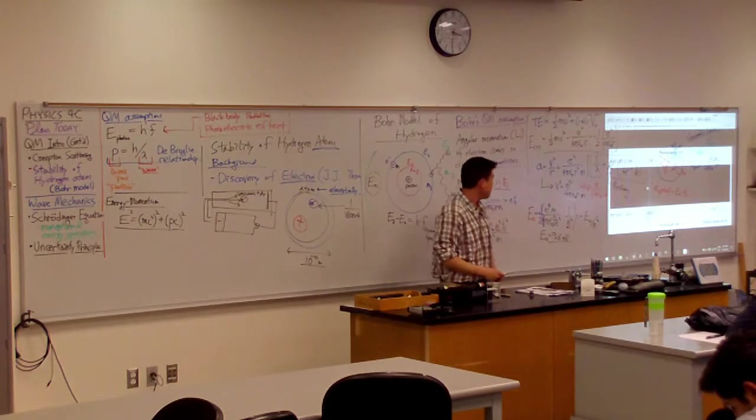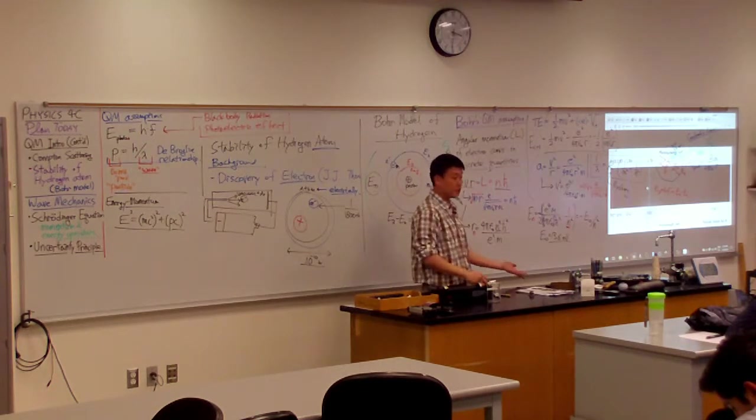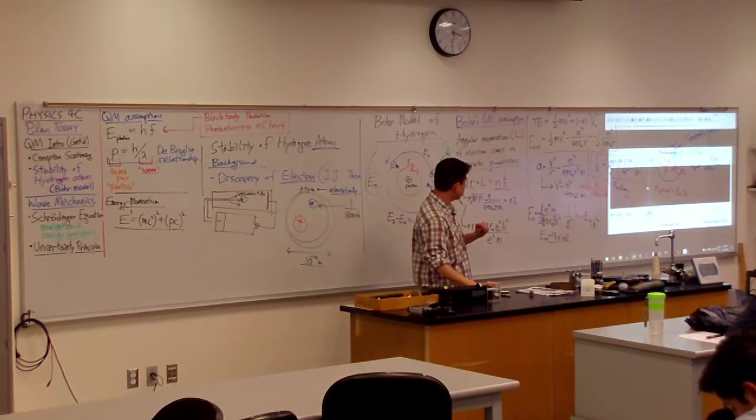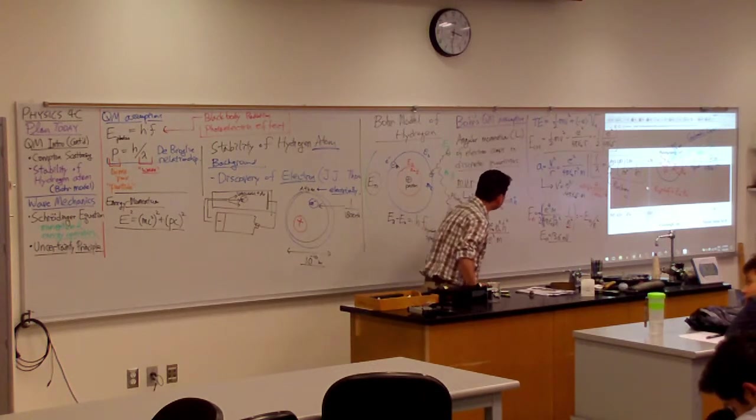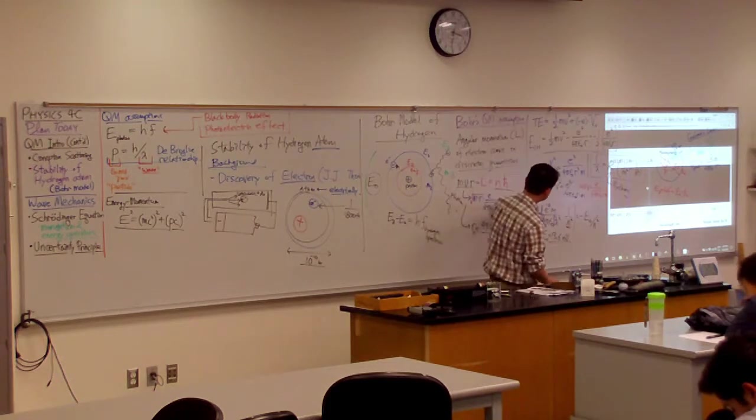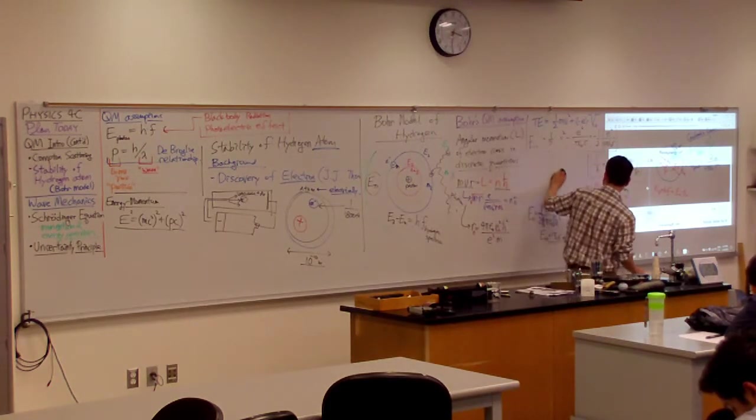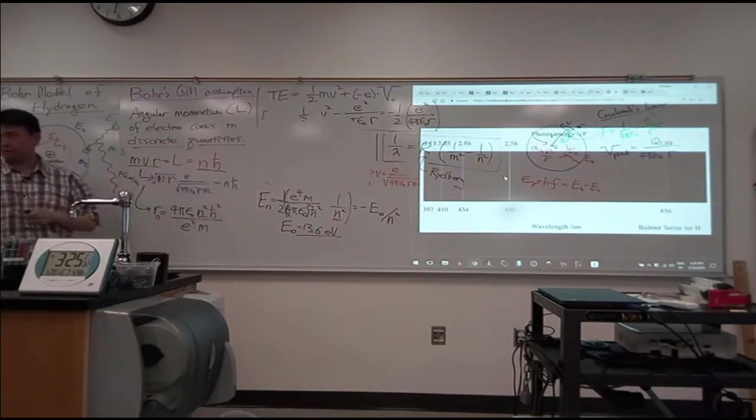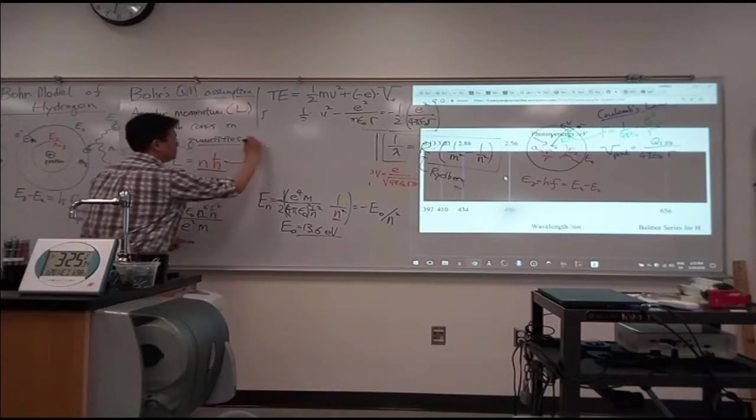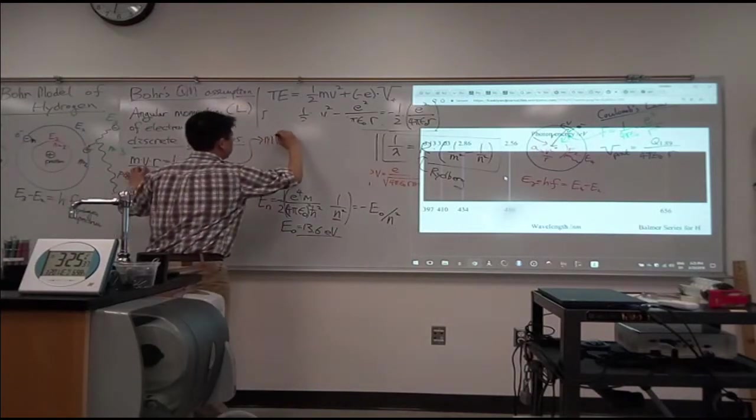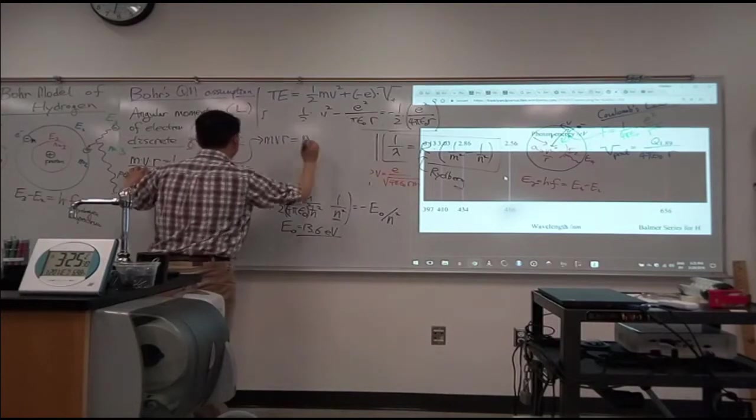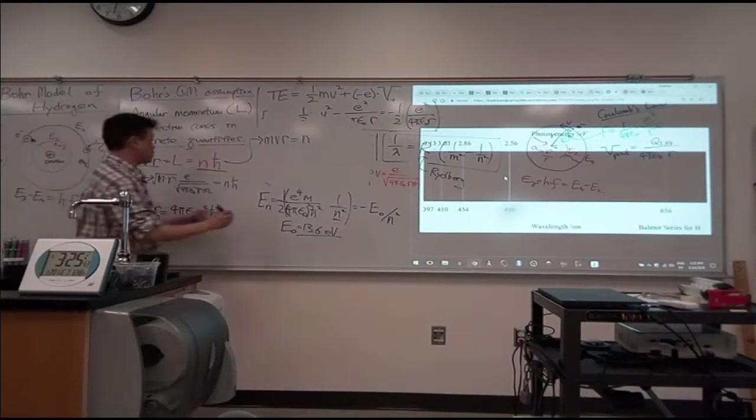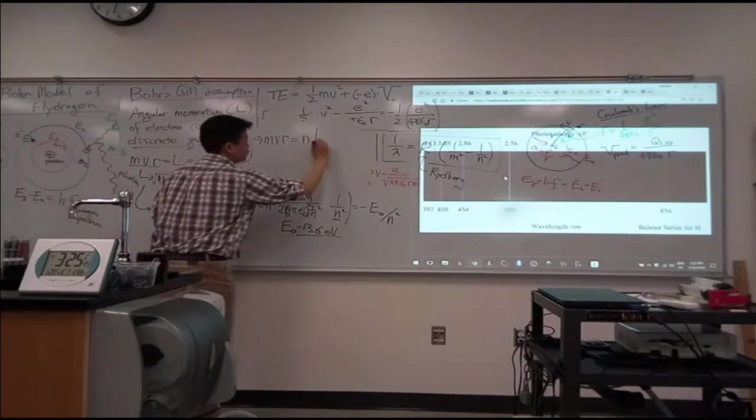Let me do a little bit of algebra to show that relationship. I have here mvr is equal to n h-bar. Let me rewrite it. So mvr is equal to n, let me rewrite h-bar once again. h-bar is actually h over 2π.